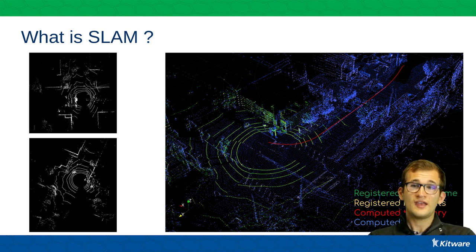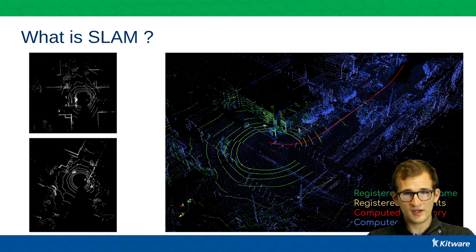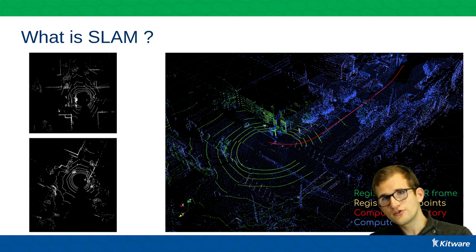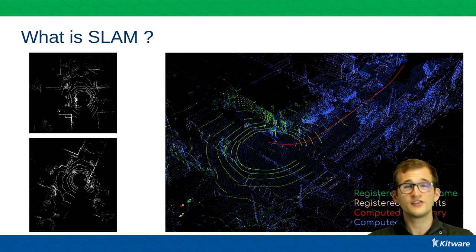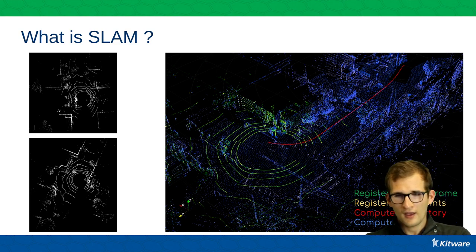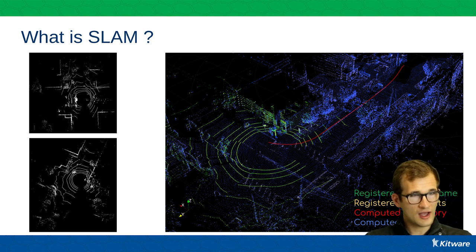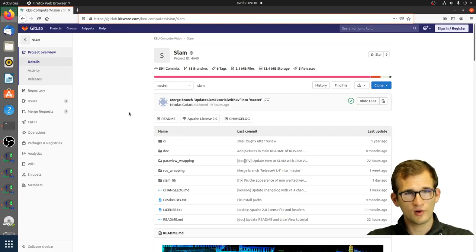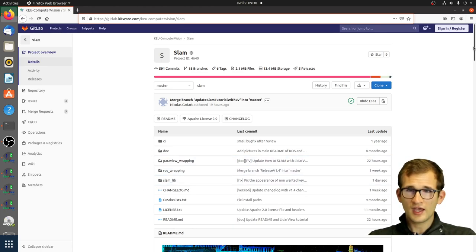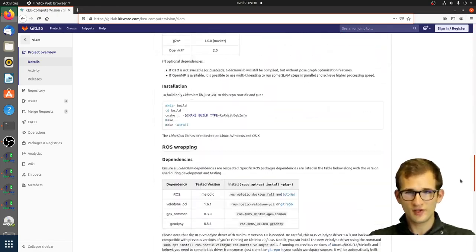The role of SLAM is to estimate the trajectory of the LiDAR sensor at any time by registering extracted key points from the current frame onto the map of key points, and then build a map of the environment, a trajectory of the LiDAR, and aggregate all points. Our SLAM is open source and available online, released under an Apache 2 license, so you can use it. All the information and source code are available on that page.